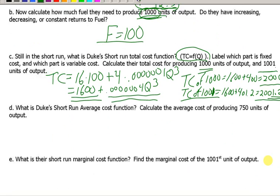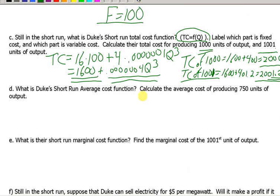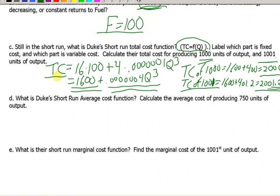All right, D, what is Duke's short-run average cost function? Calculate the average cost of producing 750 units of output. Well, to take a total cost function and get an average cost function, you just divide it by Q. So, all we have to do is take this function and divide it by Q. So, average total cost equals $1,600 over Q plus this,